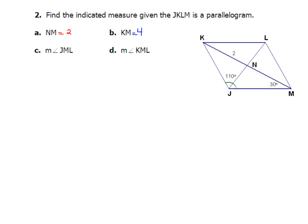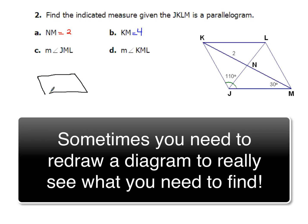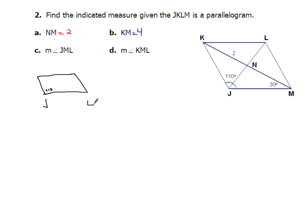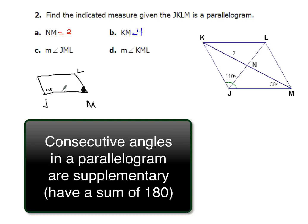Now for example C, I've got to find the measure of JML. So I'm going to redraw it a little bit just to help me see some things in here. I know all of angle J is 110. Now JML is going to be this entire angle right in here, that whole spot. I know that consecutive angles in a parallelogram are supplementary. And if I know that angle J is 110, well this missing piece has got to be 70. I get that because I do 180 minus 110, and that gives me 70 degrees. So the measure of angle JML is just 70 degrees, no big deal there.